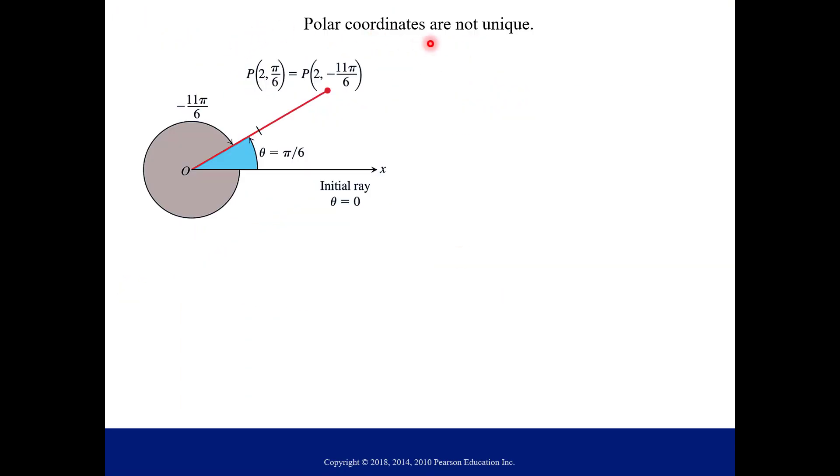So polar coordinates they're not unique. So if I have a point in space like right here, here's just two of many ways to find this point. The first one you can say if we start on the positive x-axis and sweep out an angle of pi over 6 and then move from the origin a distance of 2 away we can land at that point. But another way to get there is to start at the positive x-axis and then sweep out an angle of negative 11 pi over 6 and then from the origin sweep out a distance of 2. A quick reminder when your angles are negative it just means that you are traveling clockwise.